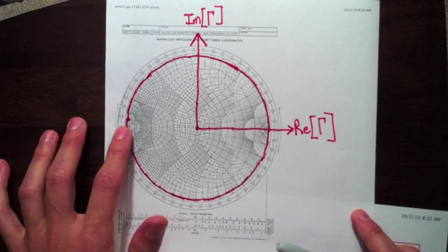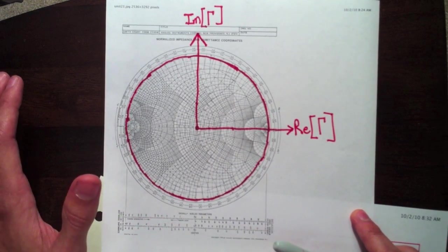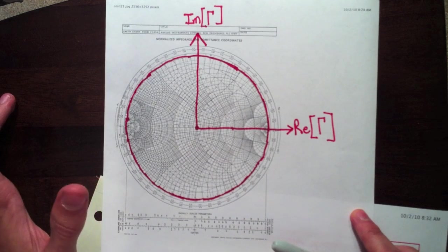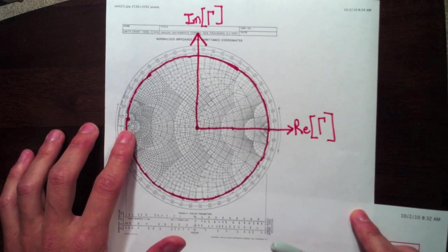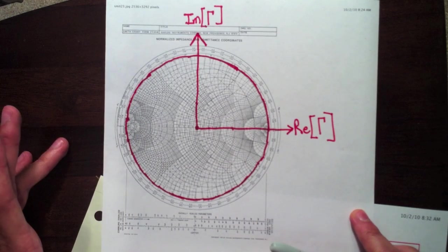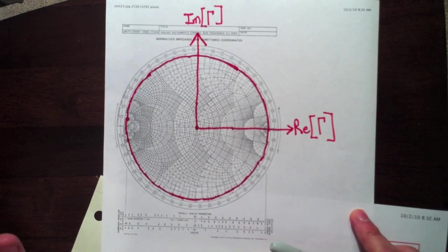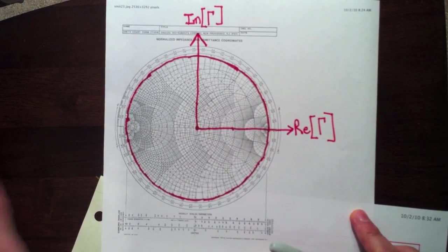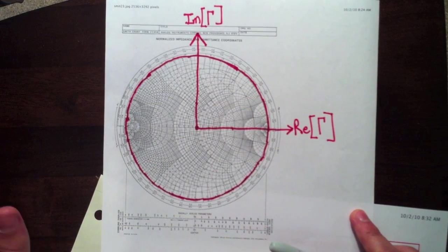So here, imagine you're in the complex plane and we're plotting the reflection coefficient gamma. So gamma, the magnitude has to be less than or equal to one, right? You can only reflect 100% of the power. You can't have more power come back than you sent for regular antennas, passive loads, whatever.